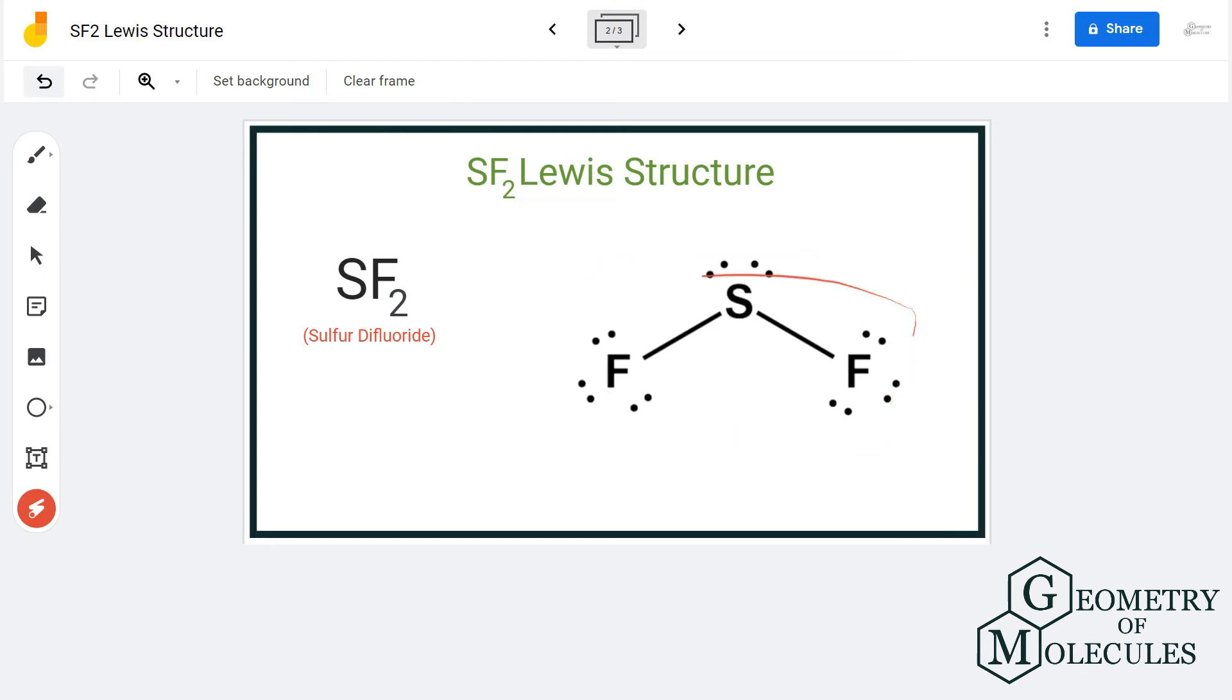This is the Lewis structure for SF2, but you should remember that these two pairs of electrons are not participating in any bond formation. These are the lone pairs of electrons which can help us determine its molecular geometry and polarity.